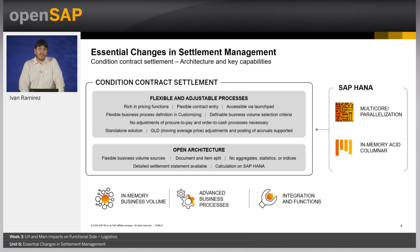The contract condition settlement architecture allows a flexible and adjustable process, overcoming the limitations of the past. Subsequent settlement scenarios are rich on pricing functions and allow flexibility on business process definition through customizing. There is no adjustment necessary on procure-to-pay and order-to-cash scenarios. Conditioned contract settlement uses in-memory technology to allow flexible business volume sources with no aggregates, statistics, or indices, delegating calculations to the HANA database.